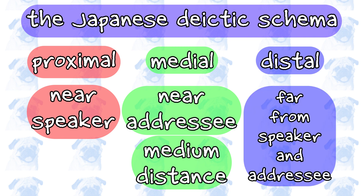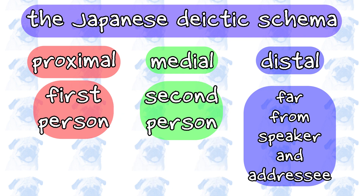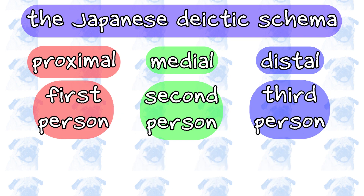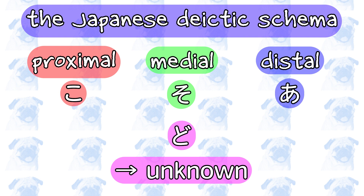Finally, the distal denotes the space beyond the previous two. This distinction corresponds more or less to the three-way distinction in grammatical person: first person, second person, and third person. The first three letters of koso-ado — ko, so, a — correspond to the proximal, medial, and distal respectively. The last remaining letter, do, is reserved for the unknown. That is, do indicates a question about an unknown entity, place, or time.